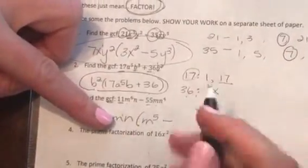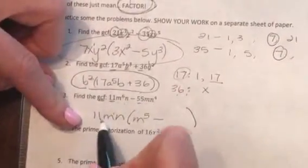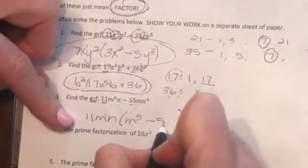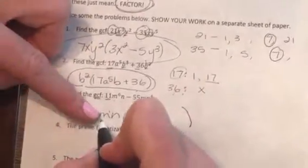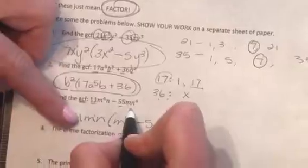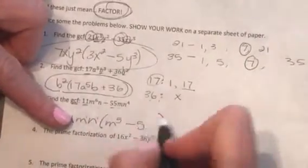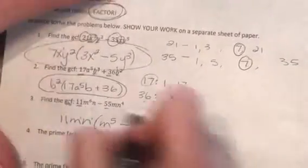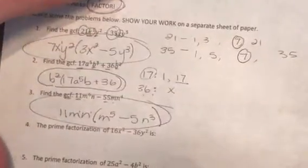The minus sign carries down, and then the 55 divided by 11 is a 5. The M divided by M cancels, and the N to the 4th divided by N to the 1st is N cubed. And there is your factored form.